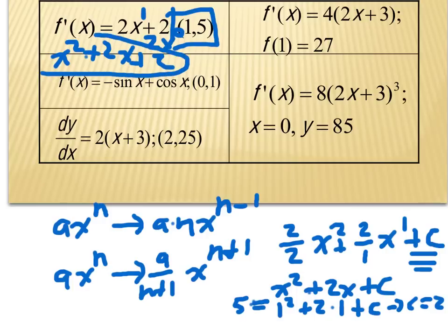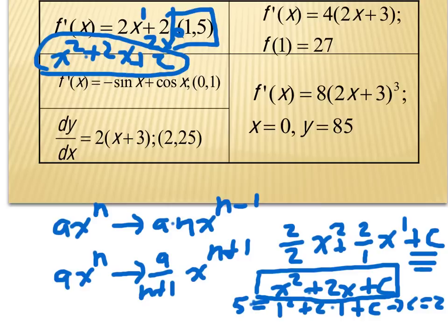Without the initial condition, the best answer would be x squared plus 2x plus c. Your answer will always have a plus c unless you have an initial condition to solve for it. On the AP exam, they expect to see that plus c.